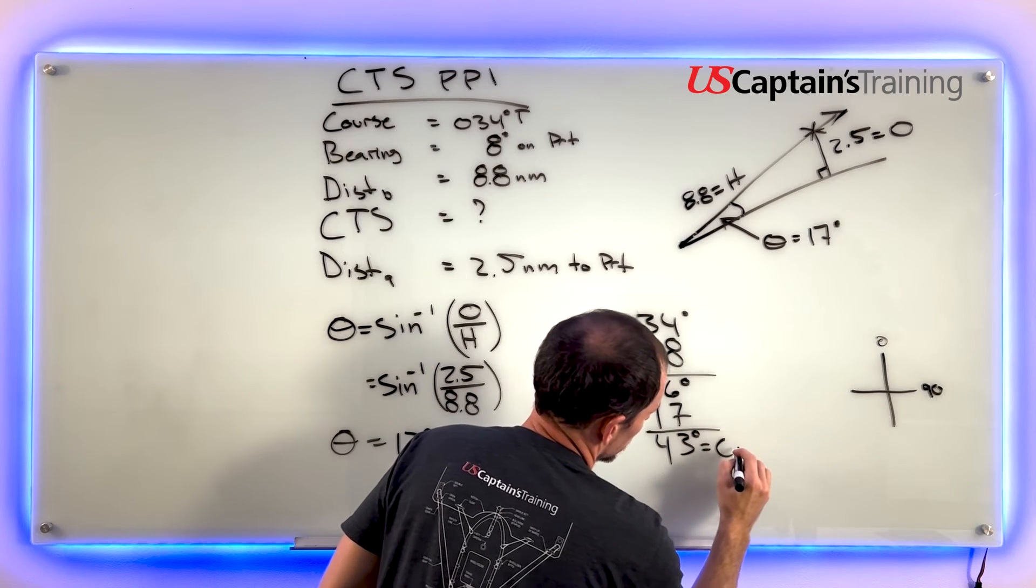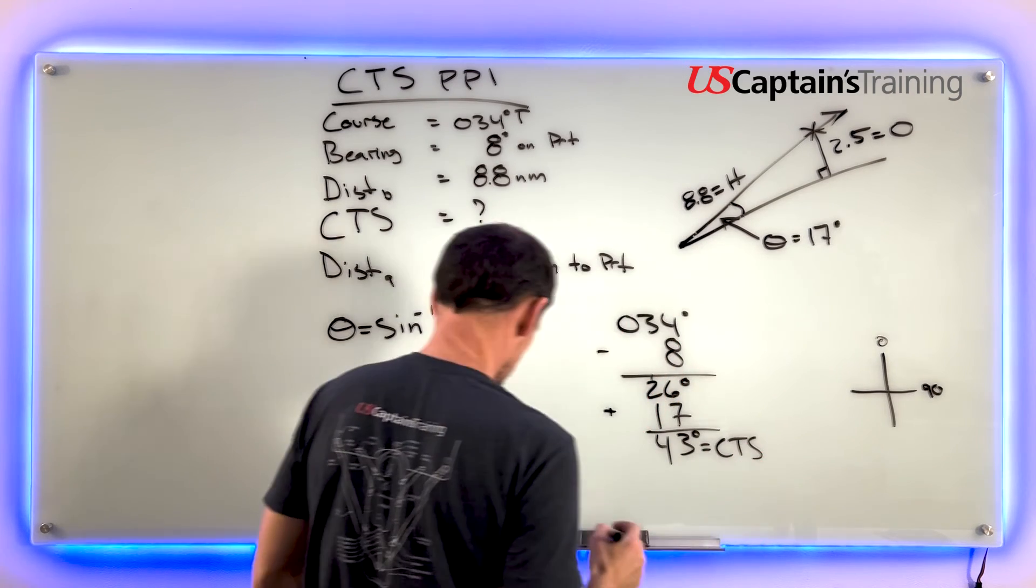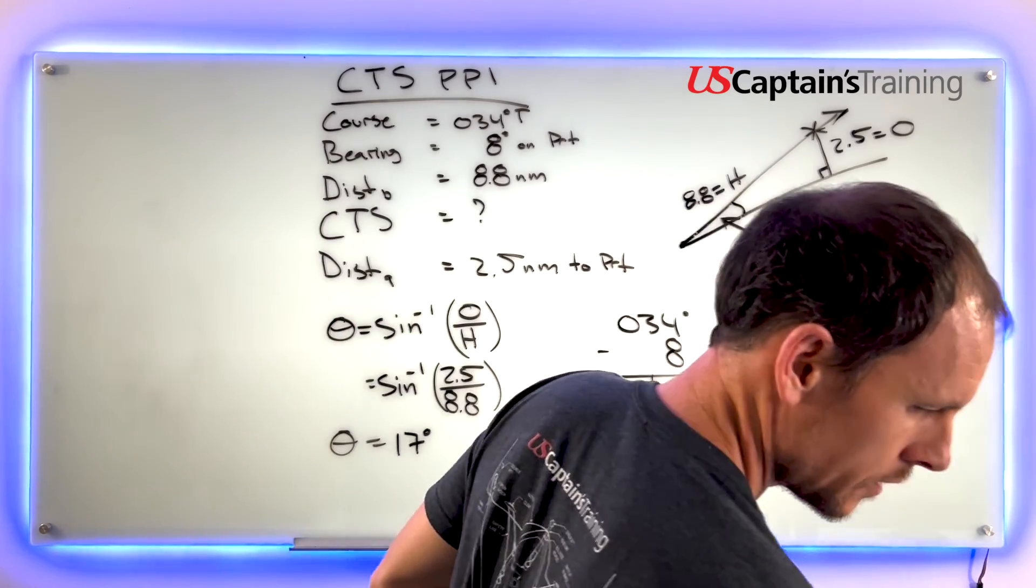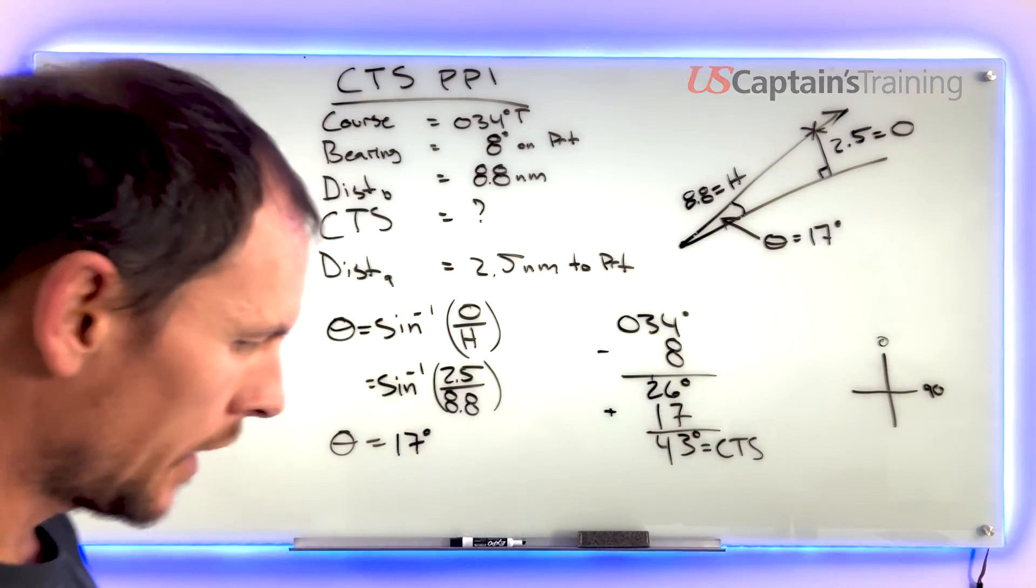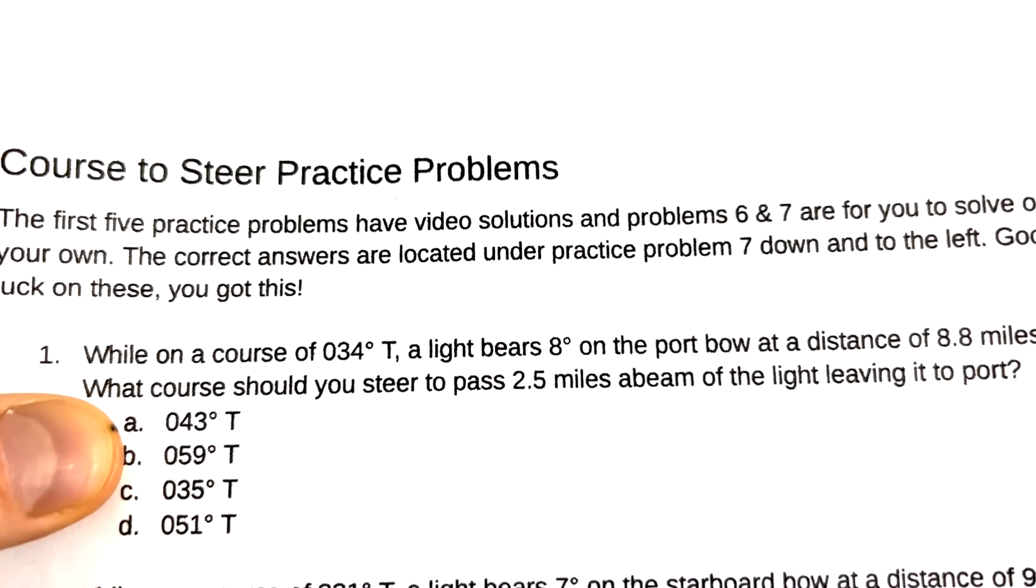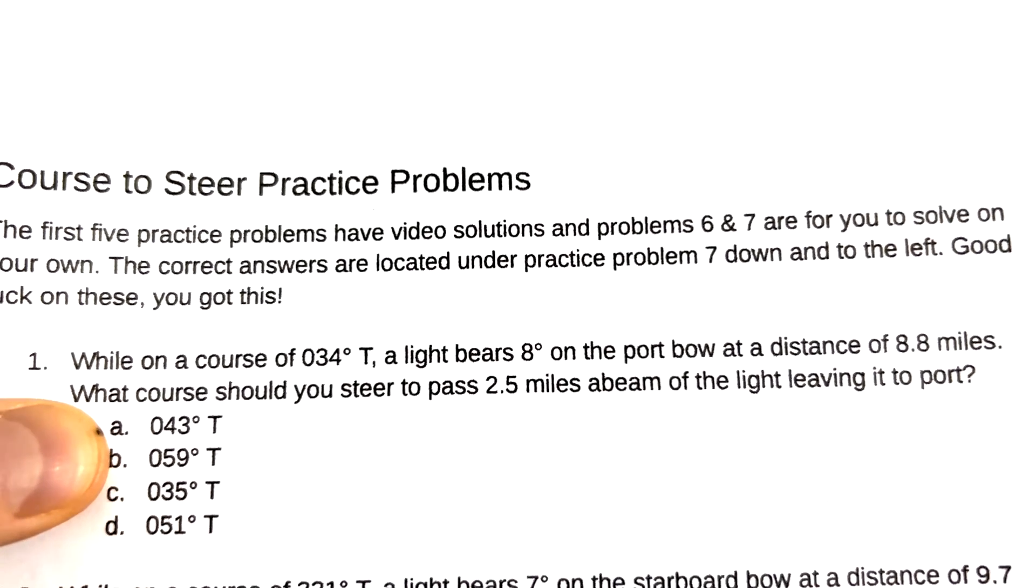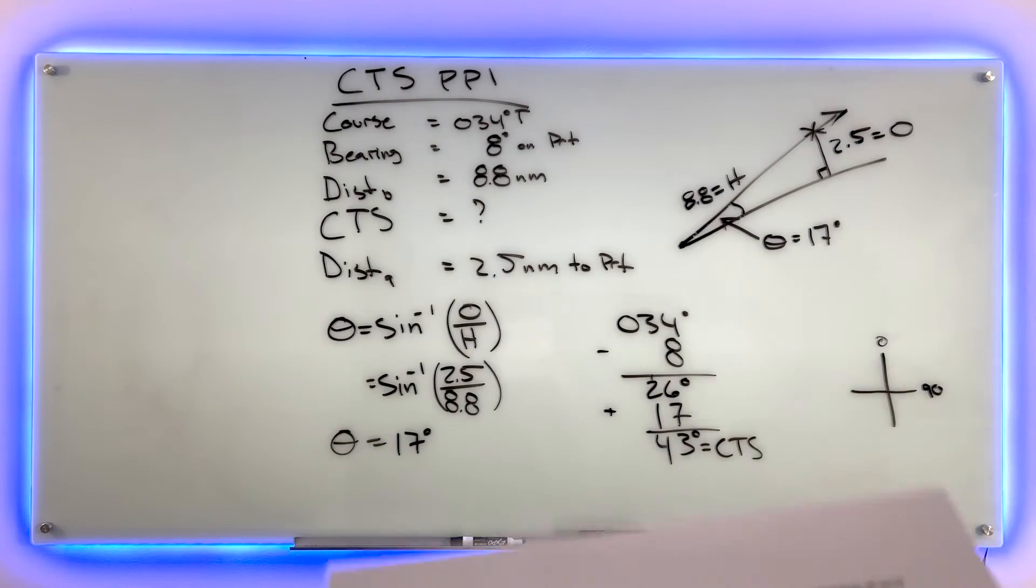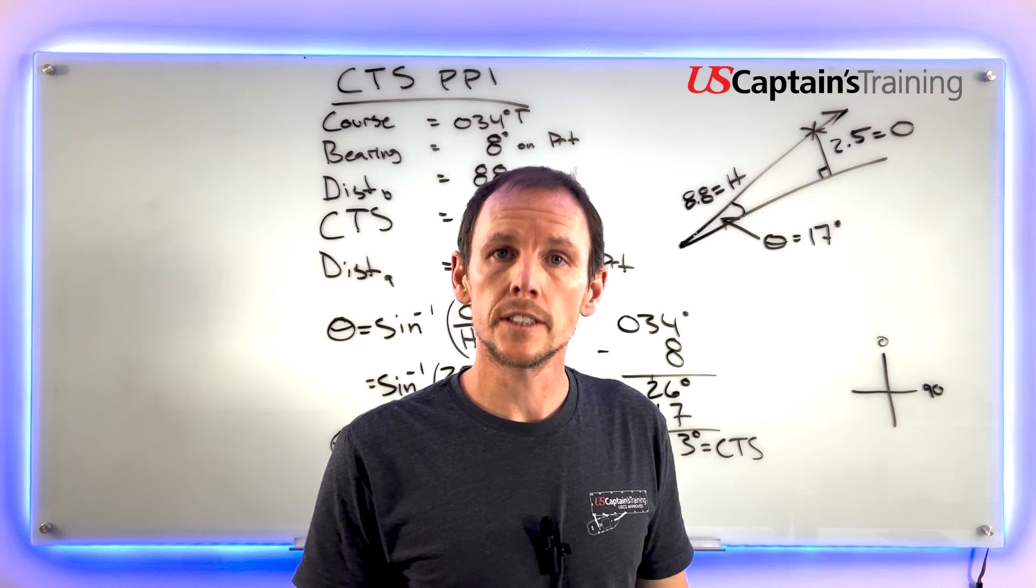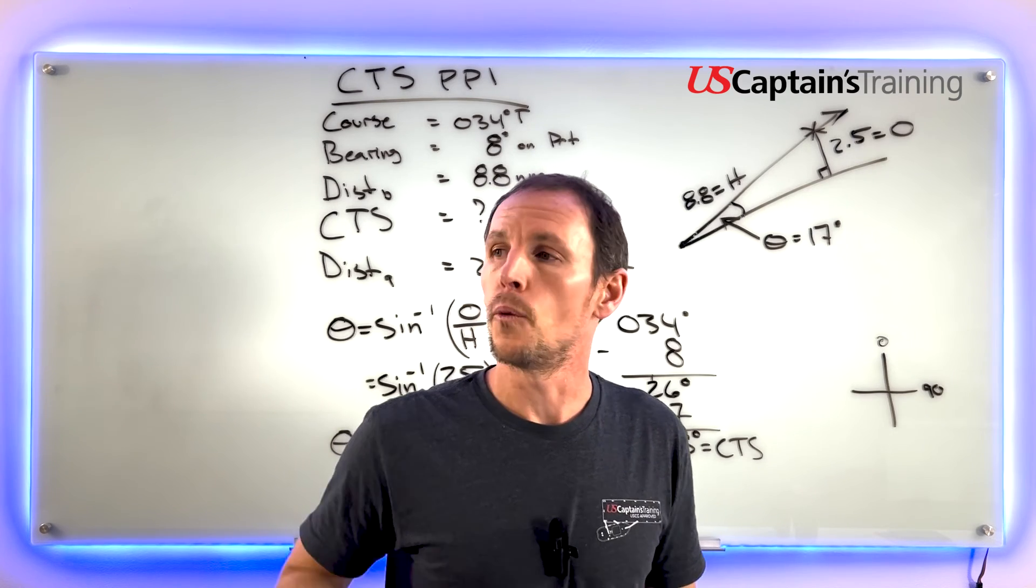Let's see if that is an answer. Problem 1a: 43 degrees true. We can check it here under problem 7.1a - that is the answer to course to steer practice problem 1. We'll keep going, there's four more that we'll solve and then there's two to do on your own.